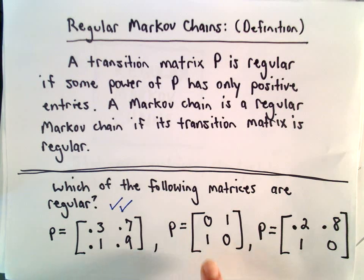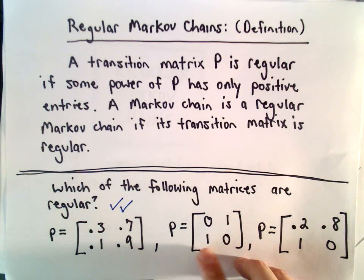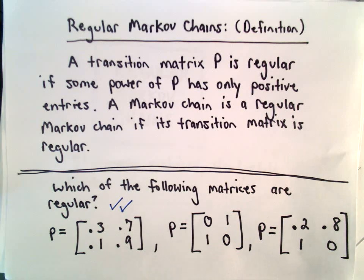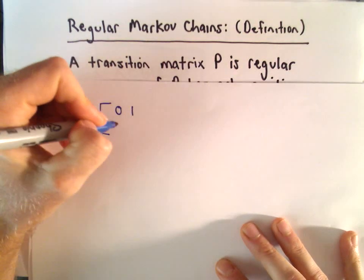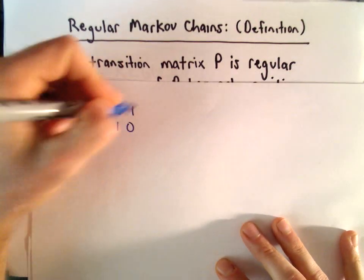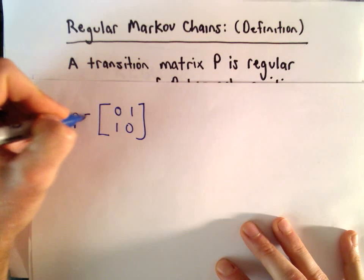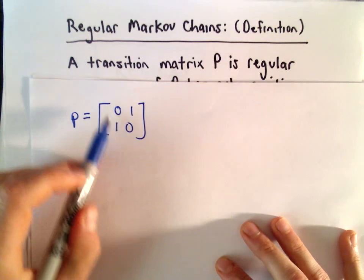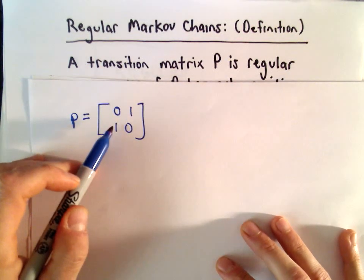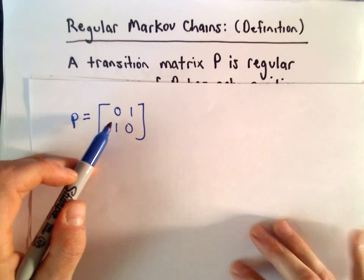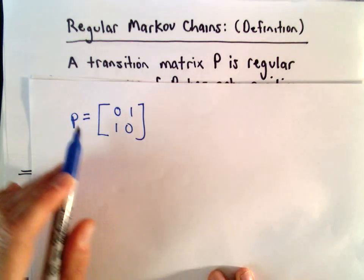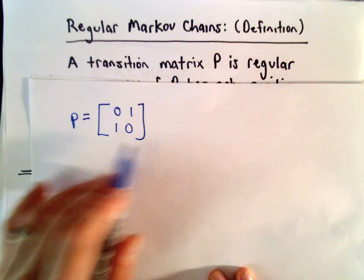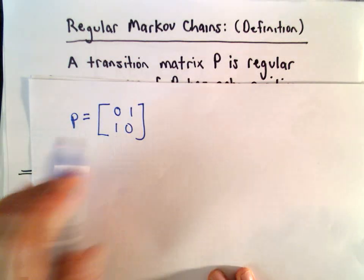Our second matrix has entries 0, 1, 1, and 0. Right now, all the entries certainly aren't positive. But that doesn't mean that this matrix P is not regular — we have to actually start looking at powers of it. So if we look at P squared, for example, we would just take the matrix and multiply it by itself.